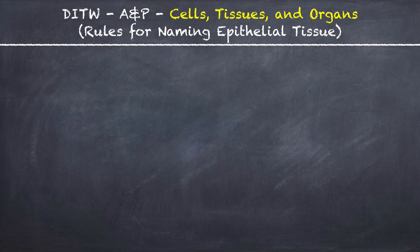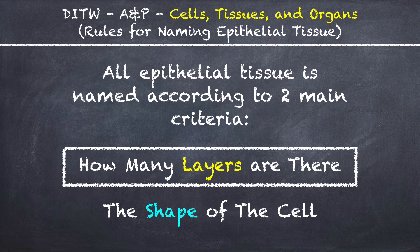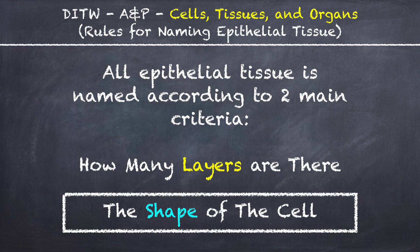This is DITW Anatomy and Physiology, and you are watching the video on rules for naming epithelial tissue. All epithelial tissue is named according to two main criteria: how many layers are there in the tissue, and the shape of the cell that composes the tissue.